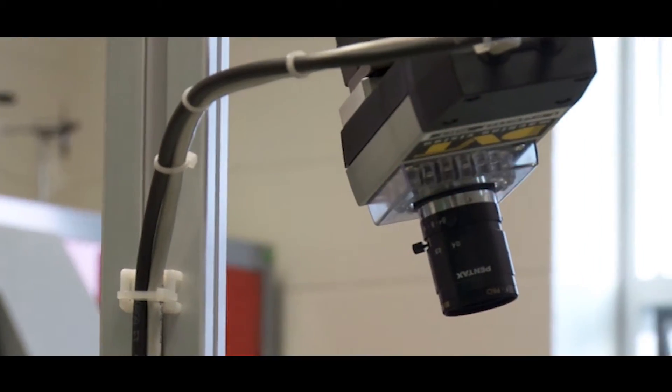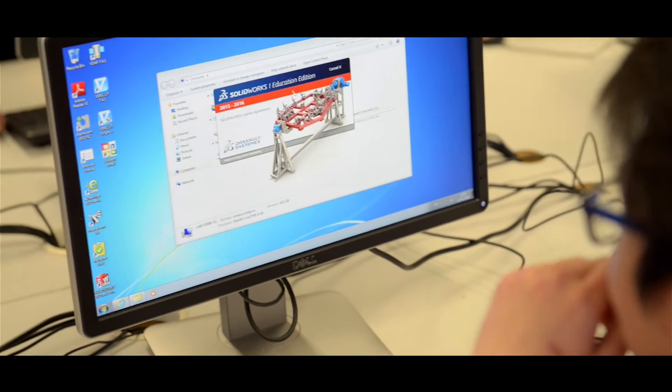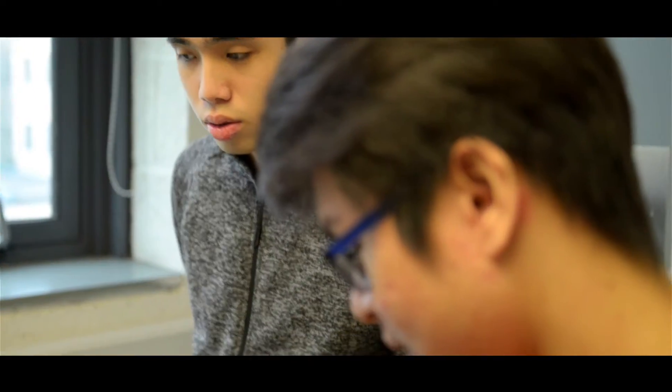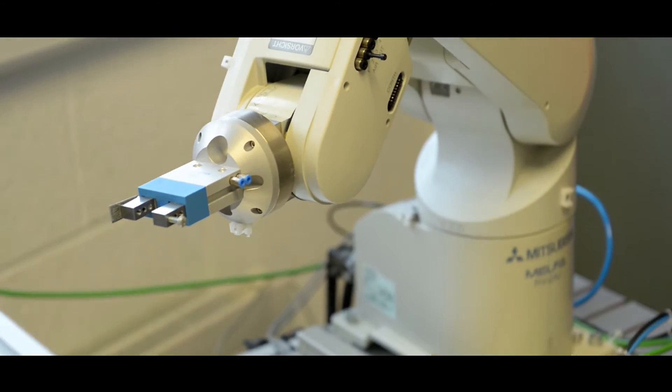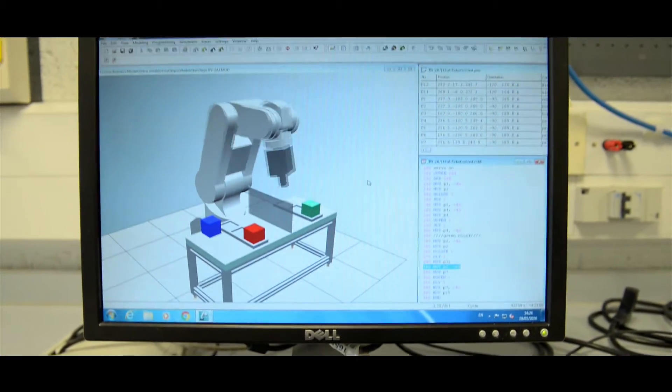Mechatronics combines mechanical and electronic engineering along with computer science. It's basically developing machines which have some form of intelligent control. Anything from robots to self-driving cars, autonomous drones to factory automation systems.